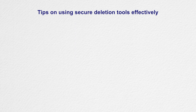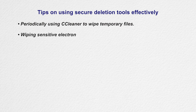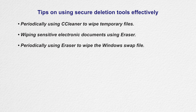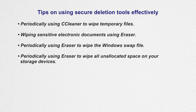You should then get into a habit of periodically using CCleaner to wipe temporary files; wiping sensitive electronic documents using Eraser instead of using the recycle bin or the Windows delete function; periodically using Eraser to wipe the Windows swap file; and periodically using Eraser to wipe all unallocated space on your hard drives, USB memory sticks, and any other storage devices that may have had sensitive information deleted from them recently — including floppy disks, rewritable CDs, rewritable DVDs, and removable flash memory cards from cameras, mobile phones, or portable music players.